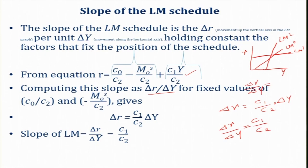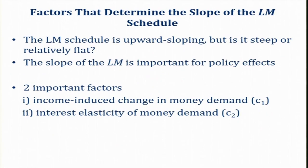The slope of the LM curve is c₁/c₂, where c₁ is the income-induced money demand parameter and c₂ is the interest-rate-induced money demand parameter. We know the LM schedule is upward sloping, but the question is whether it is steep or relatively flat. This is important for macroeconomic policy effects, which we will discuss in subsequent sessions.